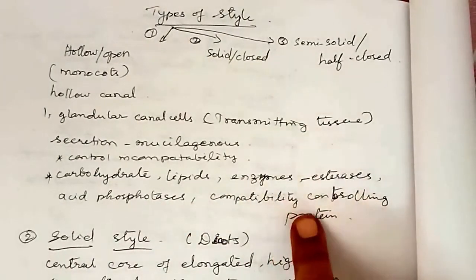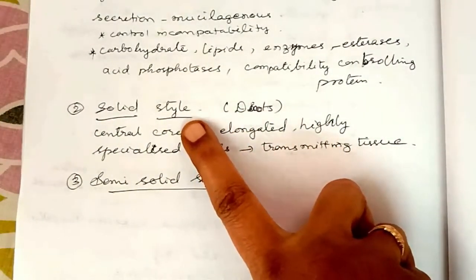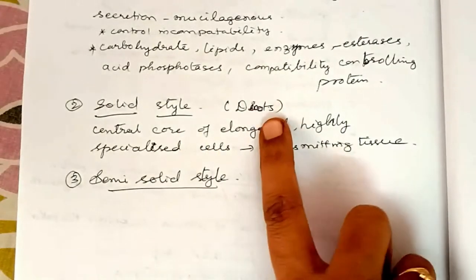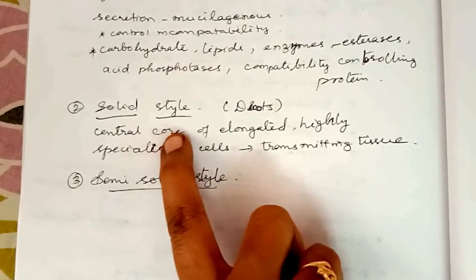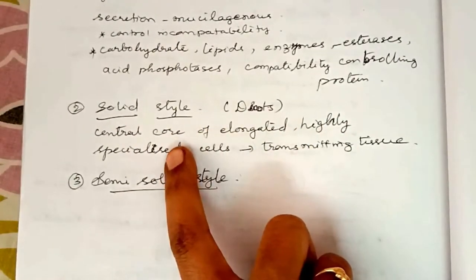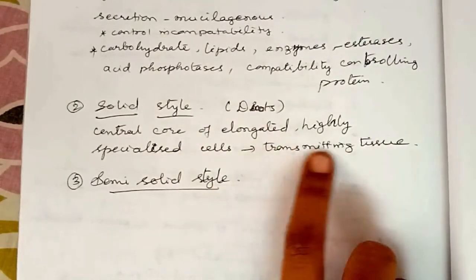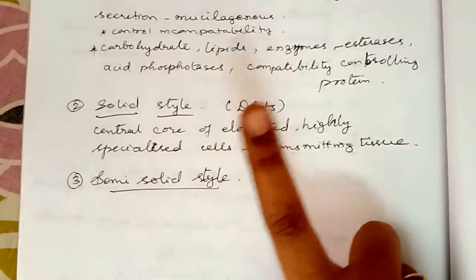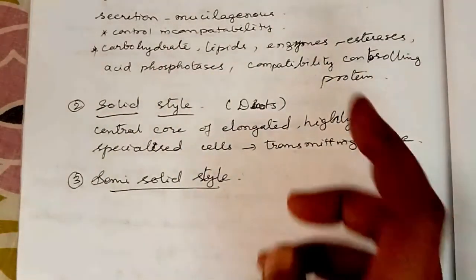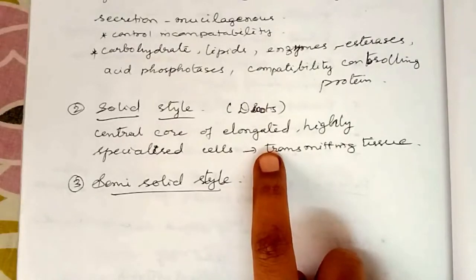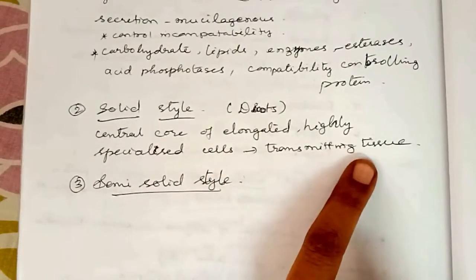The solid or closed style is common in dicot plants. It is characterized by a central core made up of elongated, highly specialized cells forming the transmitting tissue. This transmitting tissue is equivalent in function to the lining cells of the hollow style, with similar content. The pollen tube grows through the intercellular spaces of this transmitting tissue.